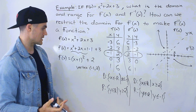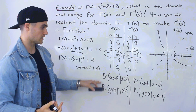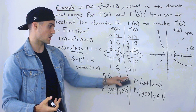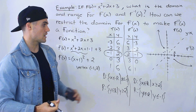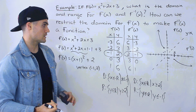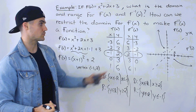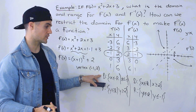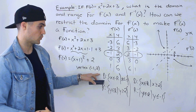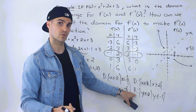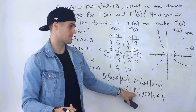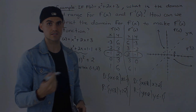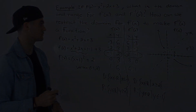Two key points: first, the domain and range of a function and its inverse are always switched. Second, you can restrict the domain of the function, which in turn restricts the range of the inverse, in order for the inverse to pass the vertical line test and be a function.